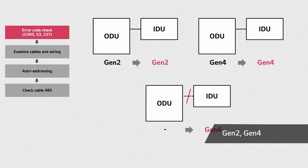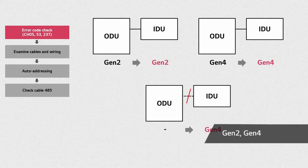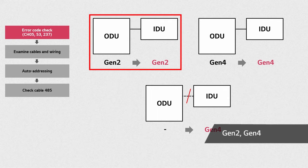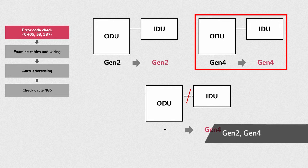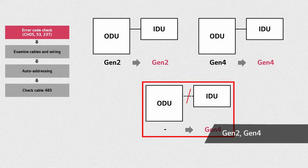The indoor unit will be initially set to Gen4, and after communication with the outdoor unit starts, the indoor unit's communication mode will be adapted and reprogrammed according to the state of the outdoor unit. If the outdoor unit is set for Gen2, the indoor unit will be set for Gen2 as well, and if the outdoor unit is set for Gen4, the indoor unit will adopt Gen4 mode. If there is no communication between IDU and ODU, the indoor unit will remain in Gen4 state regardless of the ODU communication mode.